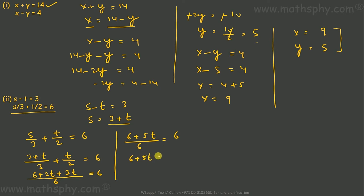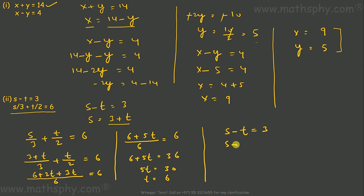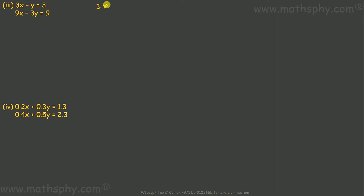So 6 plus 5T equals 36, therefore 5T equals 36 minus 6 equals 30, so T equals 30 over 5 equals 6. I have T equals 6. Now putting T equals 6 into S minus T equals 3: S minus 6 equals 3, so S equals 9. The answer is S equals 9, T equals 6.